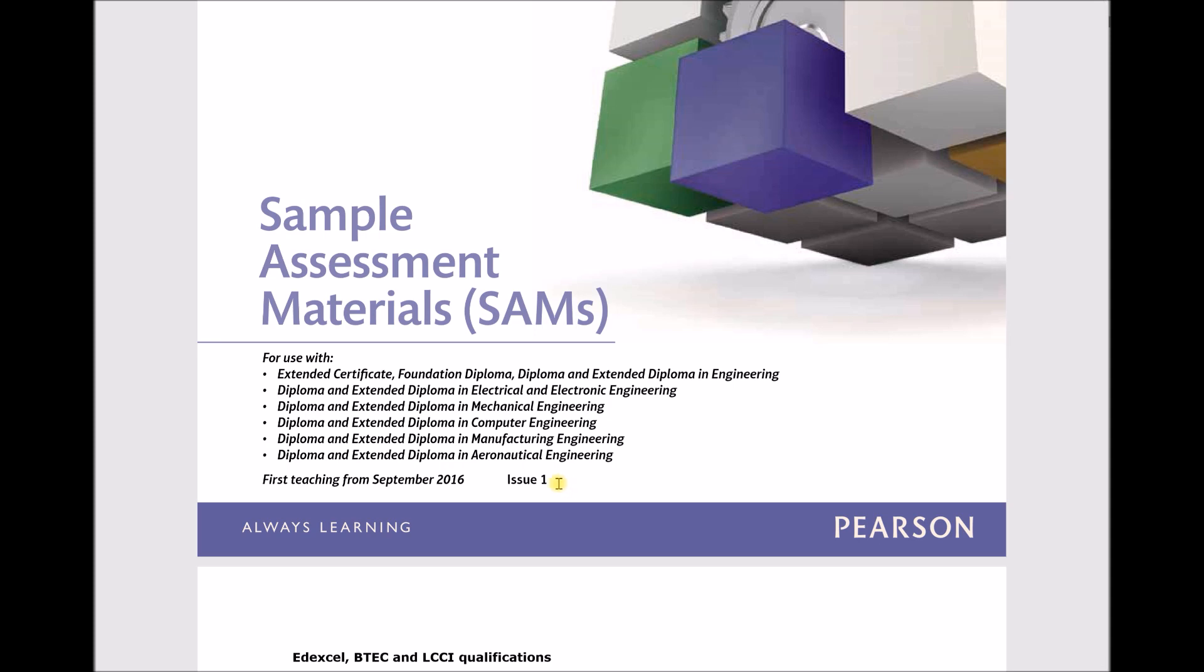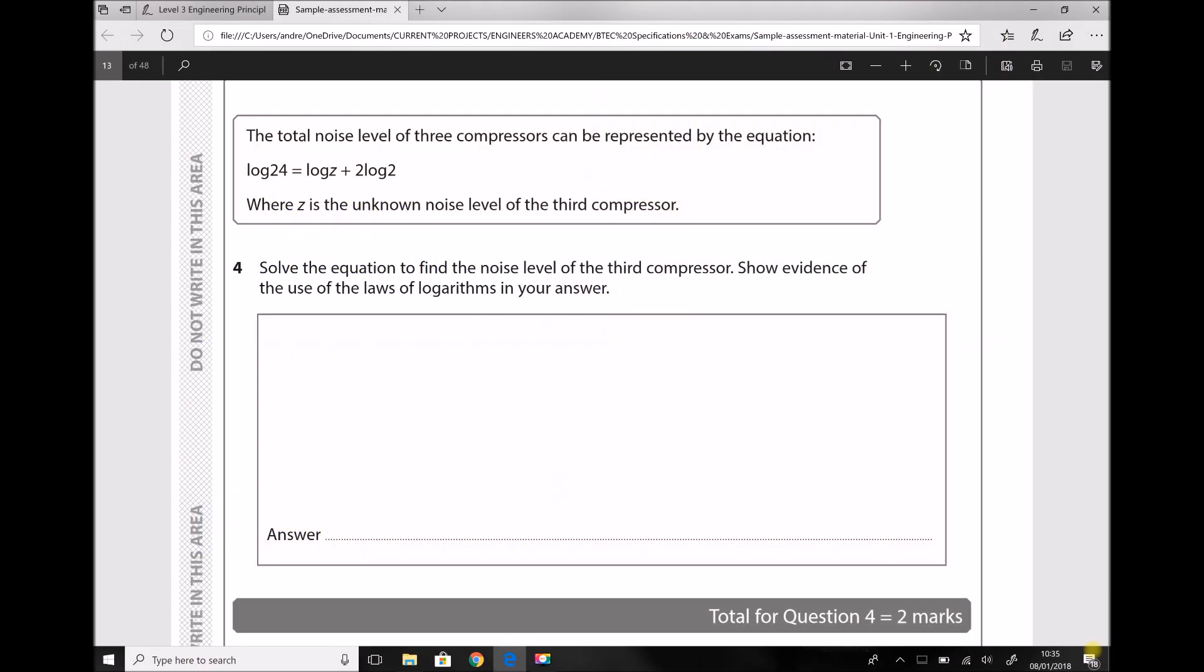Question 4 provides us with the following scenario: the total noise level of three compressors can be represented by the equation log 24 equals log z plus 2 log 2, where z is the unknown noise level of the third compressor. The question states solve the equation to find the noise level of the third compressor, showing evidence of the use of the laws of logarithms in your answer.